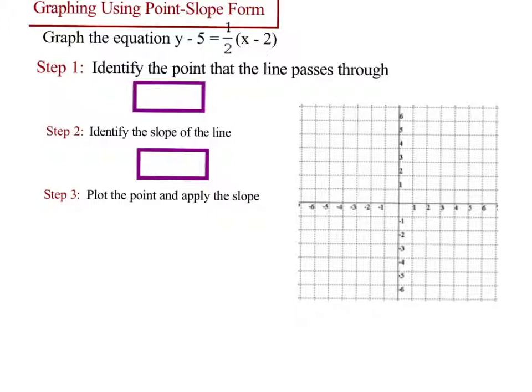So this is kind of easy. Identify the point that the line passes through. So here's my x, here's my y. So my point is (2, 5). My slope is 1 half. And basically it's plot the point and apply the slope.